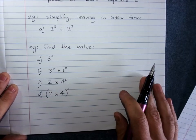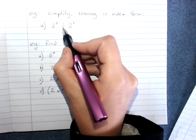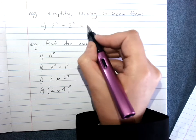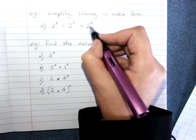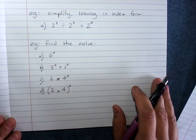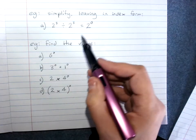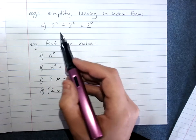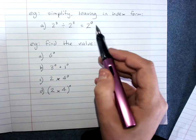So if they asked me to simplify this, leave it in index form: 2 to the power of 3 divided by 2 to the power of 3, we know we subtract, 3 minus 3 is 0. They said leave it in index form, so we'll leave it as 2 to the power of 0. We might also get asked to find the value or to simplify, and if we just got told to simplify, we'd take this to 1.